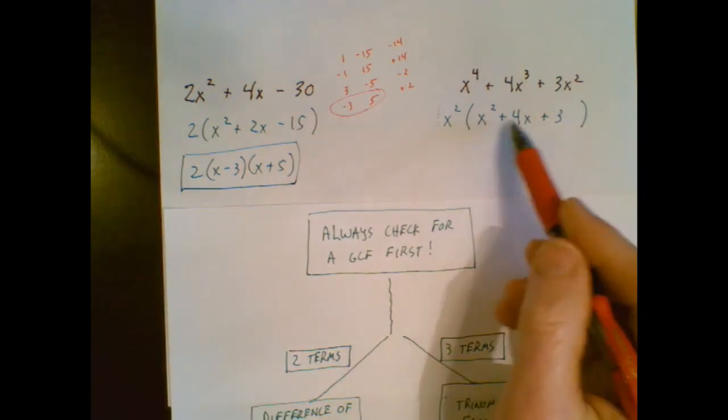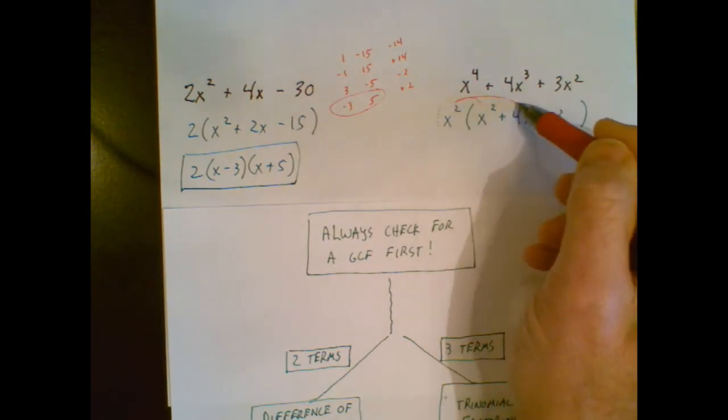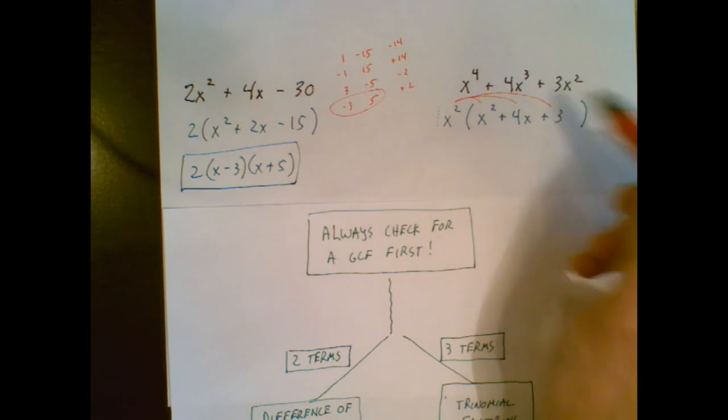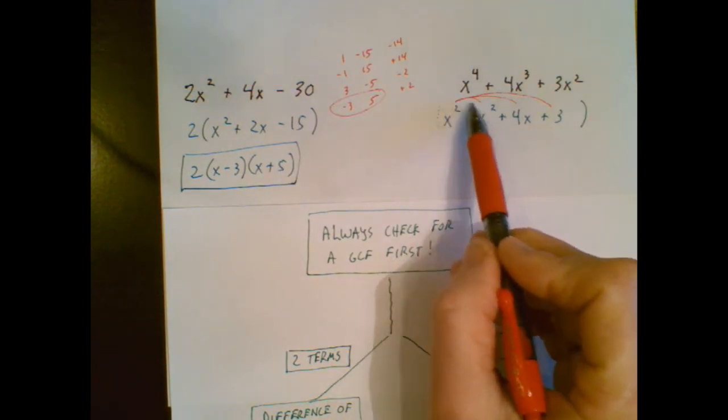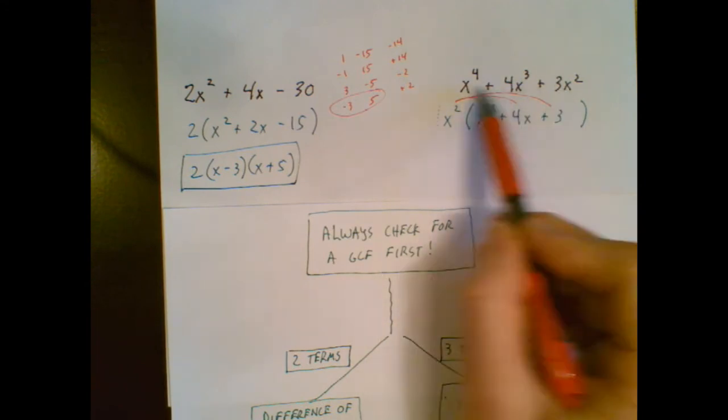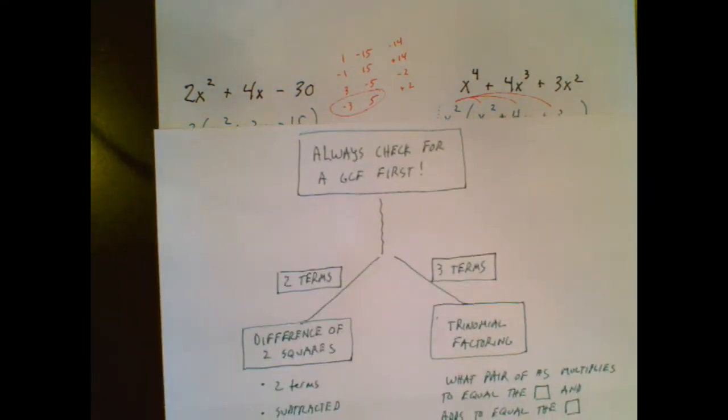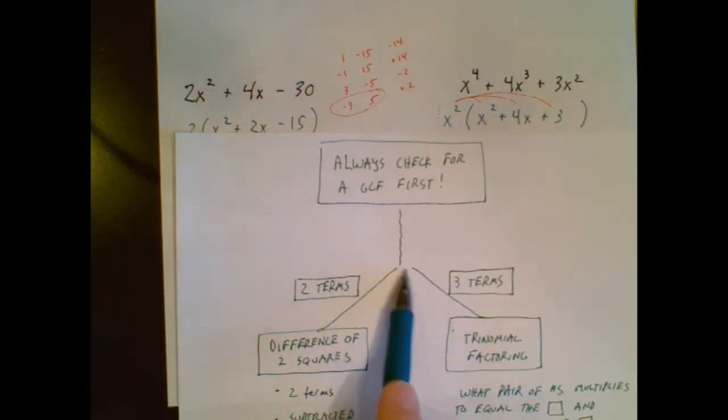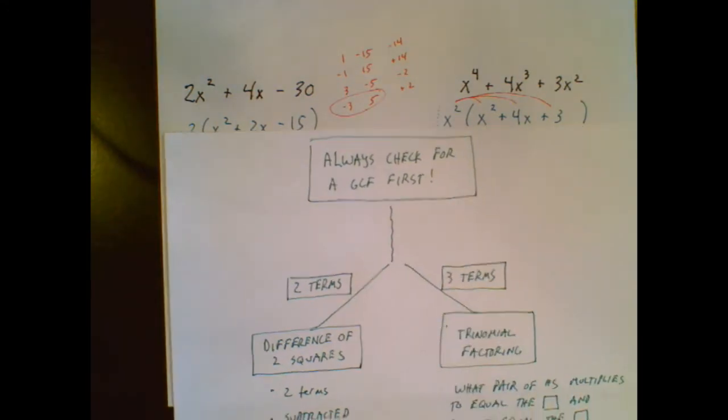Now, factoring out that GCF gets a little bit rough sometimes. Remember, you're putting in here whatever works so that when you check yourself, the multiplication worked out. So when you, if you don't end up back there, that means you need to adjust one of those. At this point on my flow chart, I've done my GCF, and I see that what's remaining has three terms. So I think about this statement.